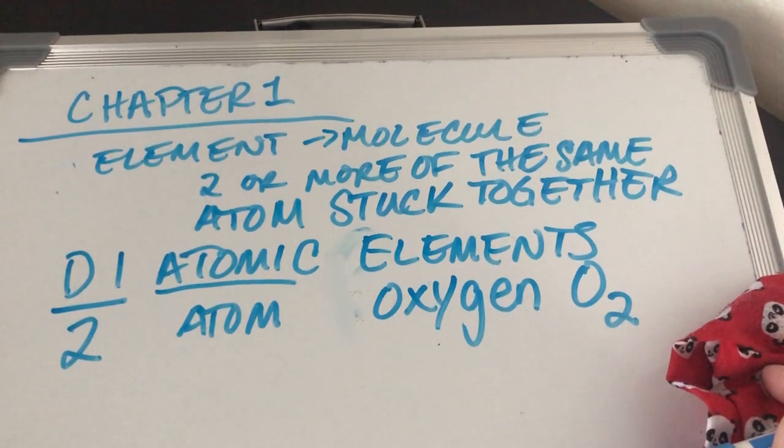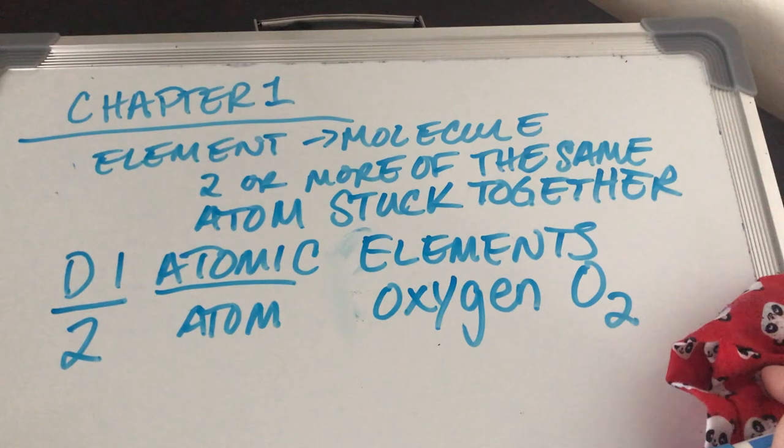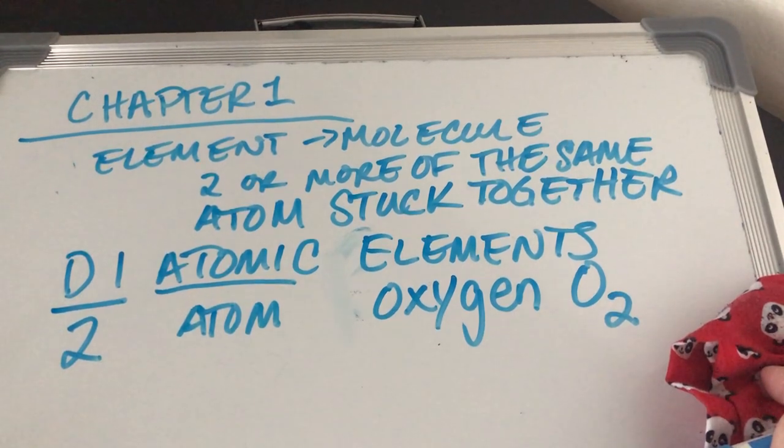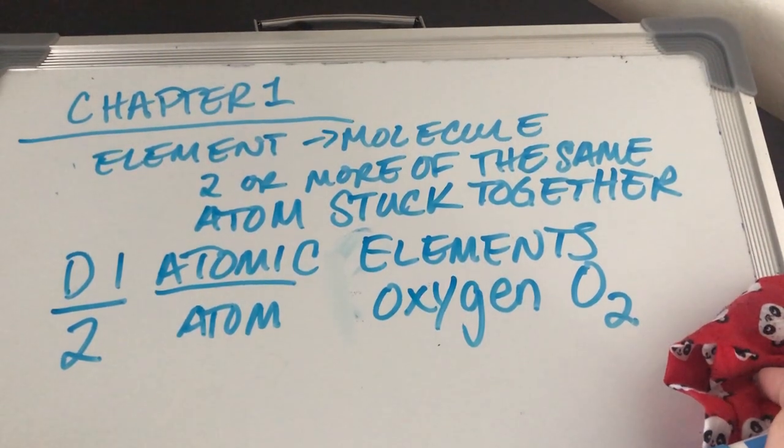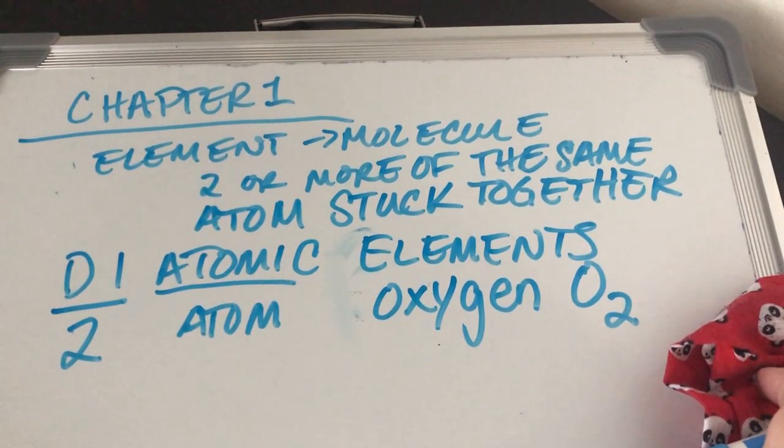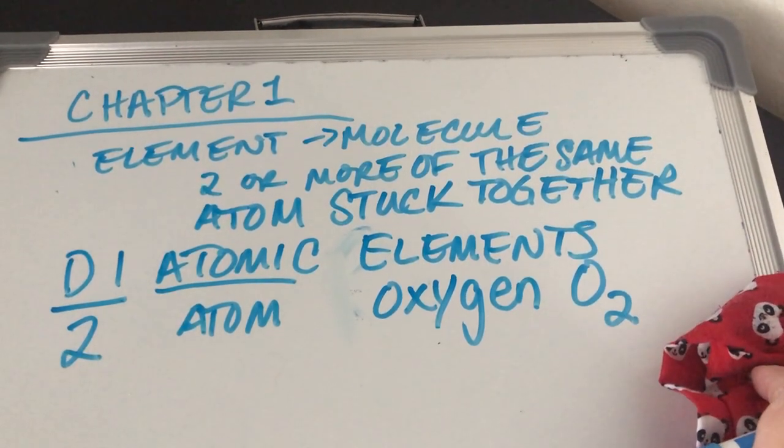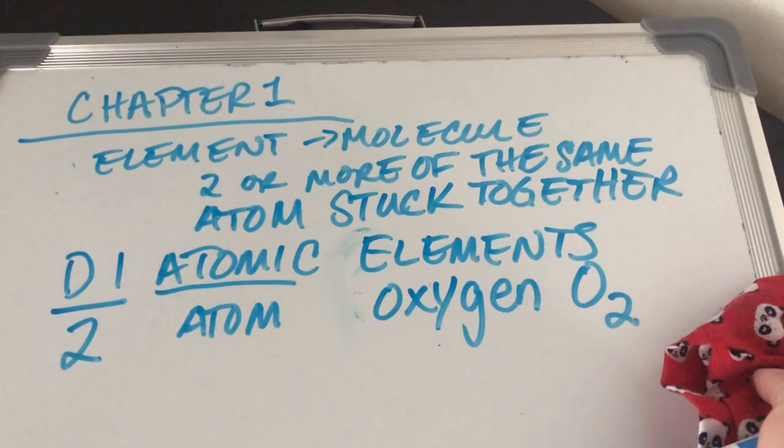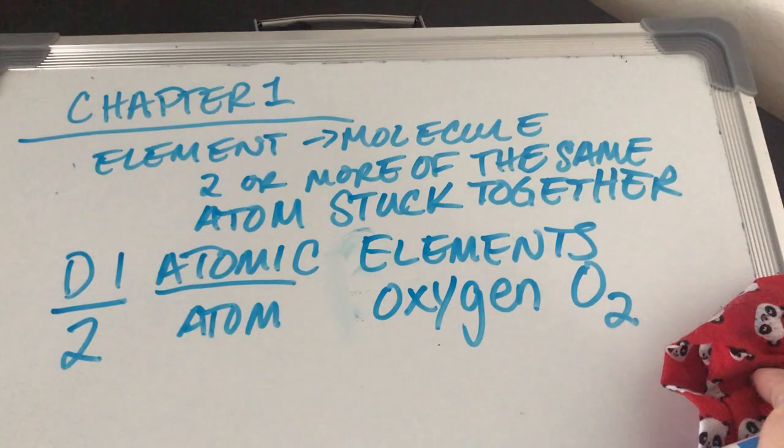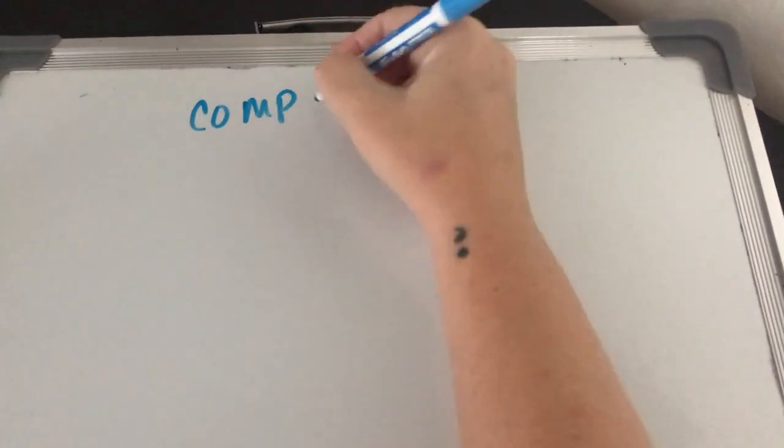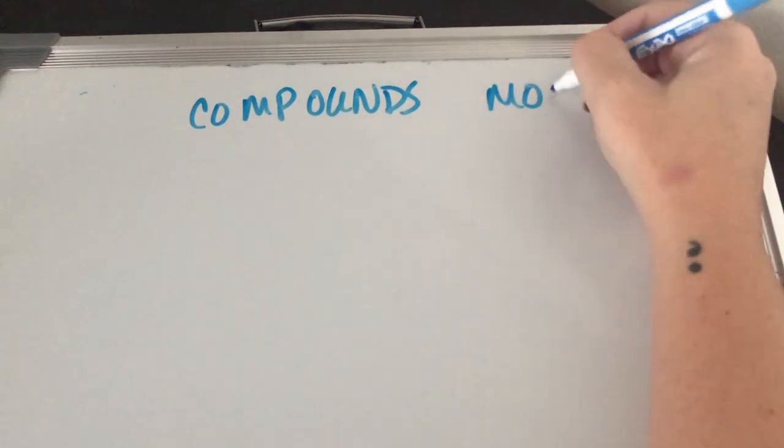So we have elements that can be atoms or molecules. Then we have compounds. What is a compound? A compound is a combination of two or more different elements of atoms. That's correct. So you have two or more different flavors of atoms stuck together. So can a molecule be a compound? Yeah. Yes. Are all compounds molecules? No.